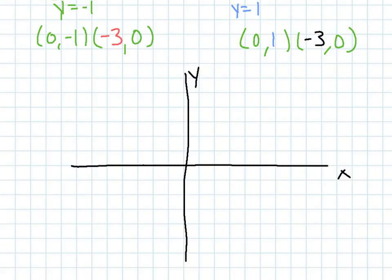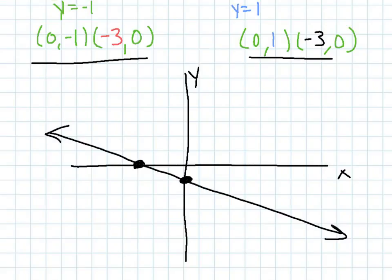Now, let's plot those points. So, if I plug in these points, 0, negative 1, negative 3, 0, I get this line. If I plug in these points, 0, 1, negative 3, 0, I get this line. Notice how they already intersect to one of the points you already know.